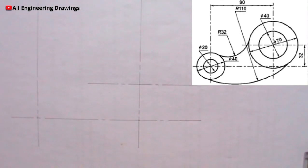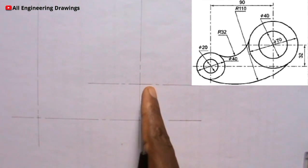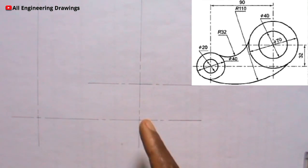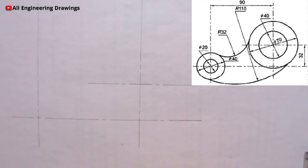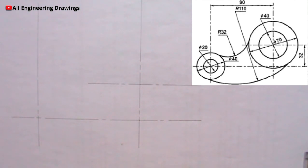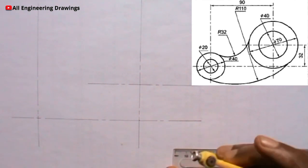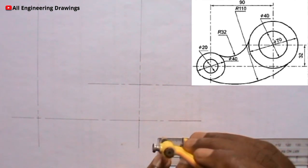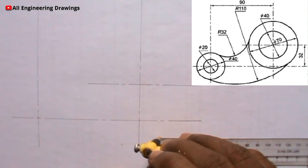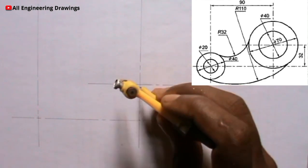You have your layout already. Now it is time to draw the circles. You observe that at this point here there is a circle of diameter 40mm, which is a radius of 20mm. So I will take 20mm from my ruler, then I will draw the circle.